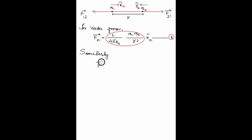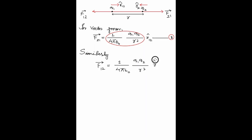Similarly, we can write that F₁₂ vector, which is the force on charge Q1 due to Q2, is equal to (1 / 4πε₀) × (Q1 Q2 / R²) × r̂₂₁, where r̂₂₁ is the unit vector from Q2 toward Q1.